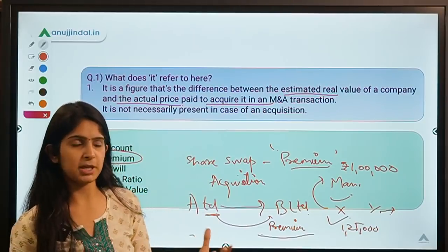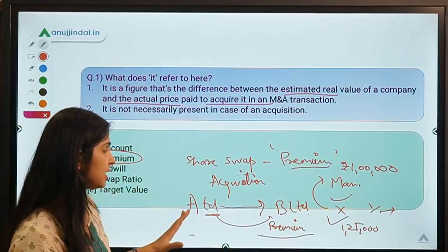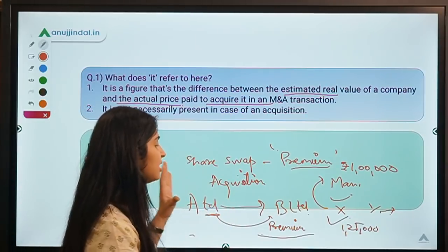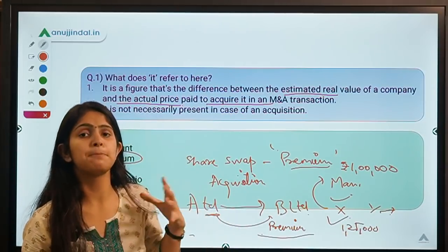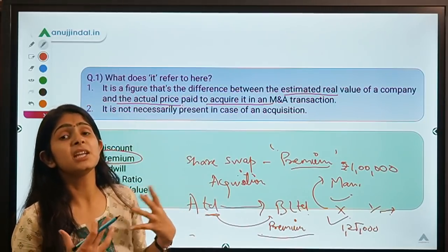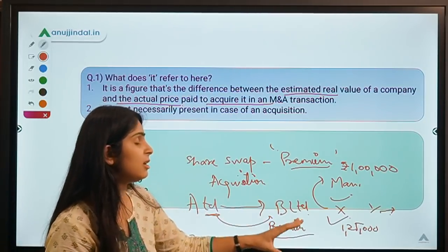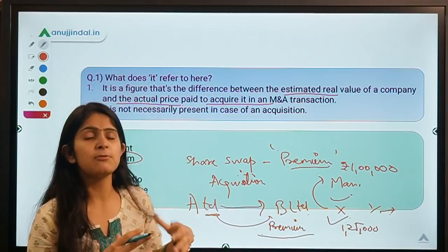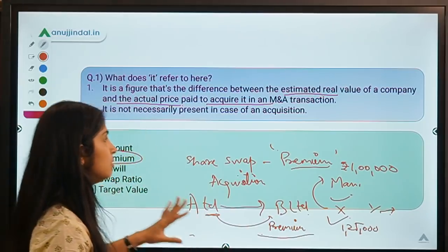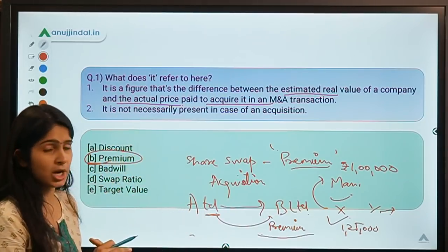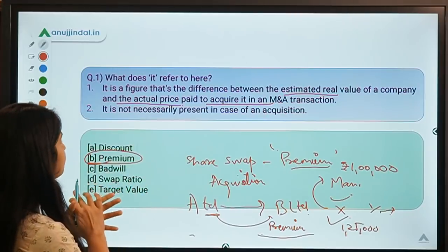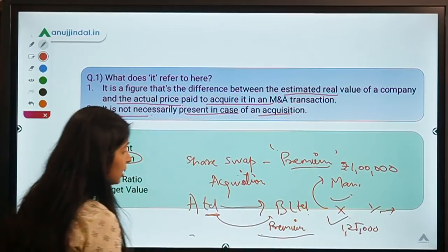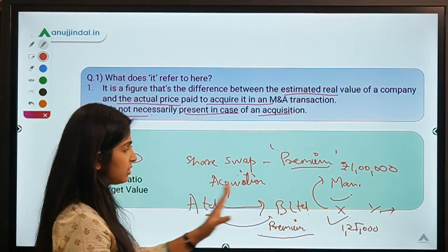Similarly, if acquiring B Limited holds great potential for A, they are willing to pay something extra — more than the real value of B Limited — for its growth potential. This difference is called premium. However, premium is not necessarily present in every acquisition.